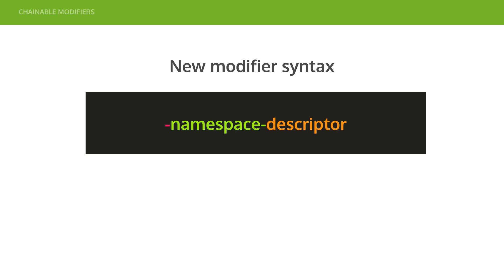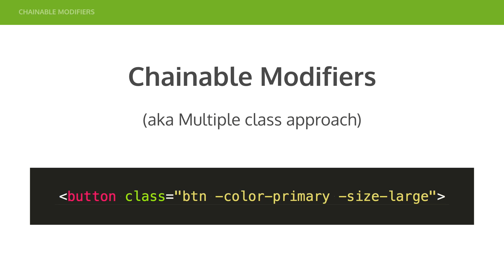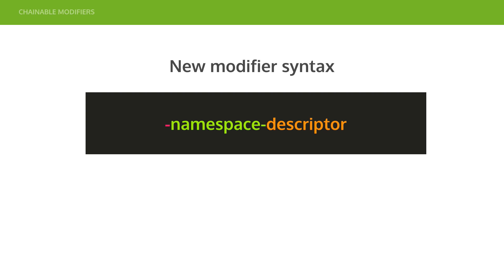Modifiers have a new syntax. You'll notice there's a class with a leading hyphen — you're like, what the hell is that? First time I saw it I wondered who wrote this, then I looked into it and realized they were really smart. You can use a lot of different things to write classes — it doesn't have to be words and letters. So we've got a leading hyphen to denote it's a chainable modifier. Then there's a namespace which describes the change that's going to happen — so if you want to change the color of your buttons it'll be -color, and this could change the font color, the background color, or anything to do with color.